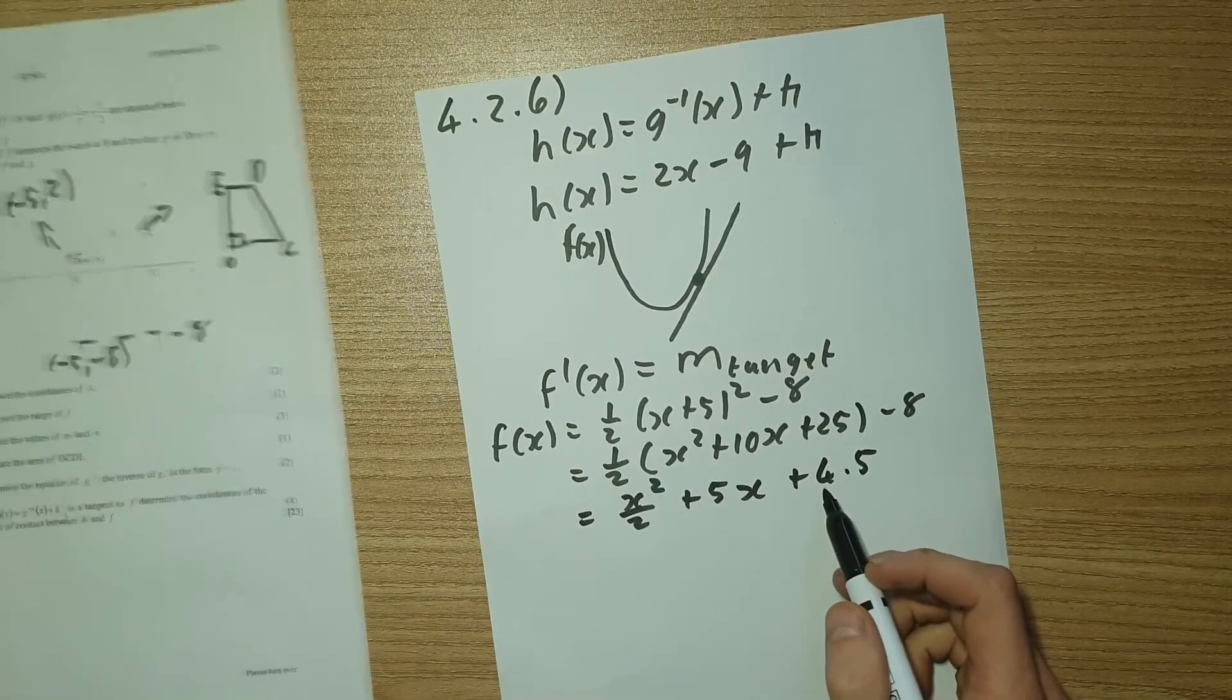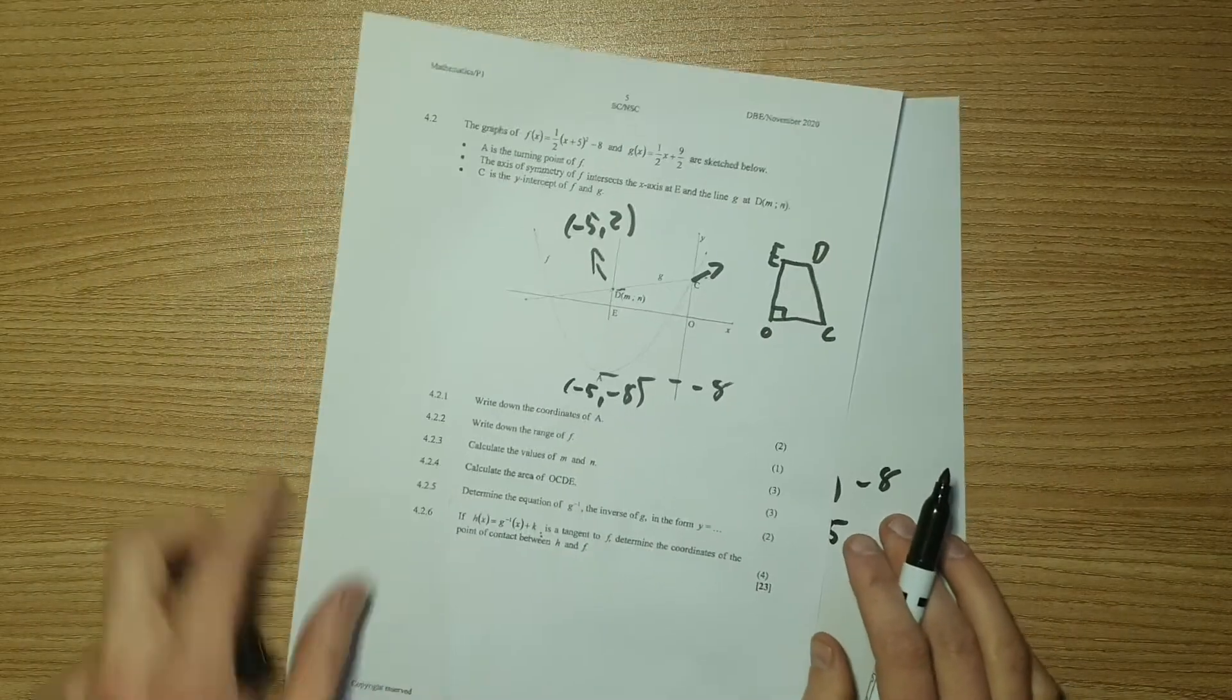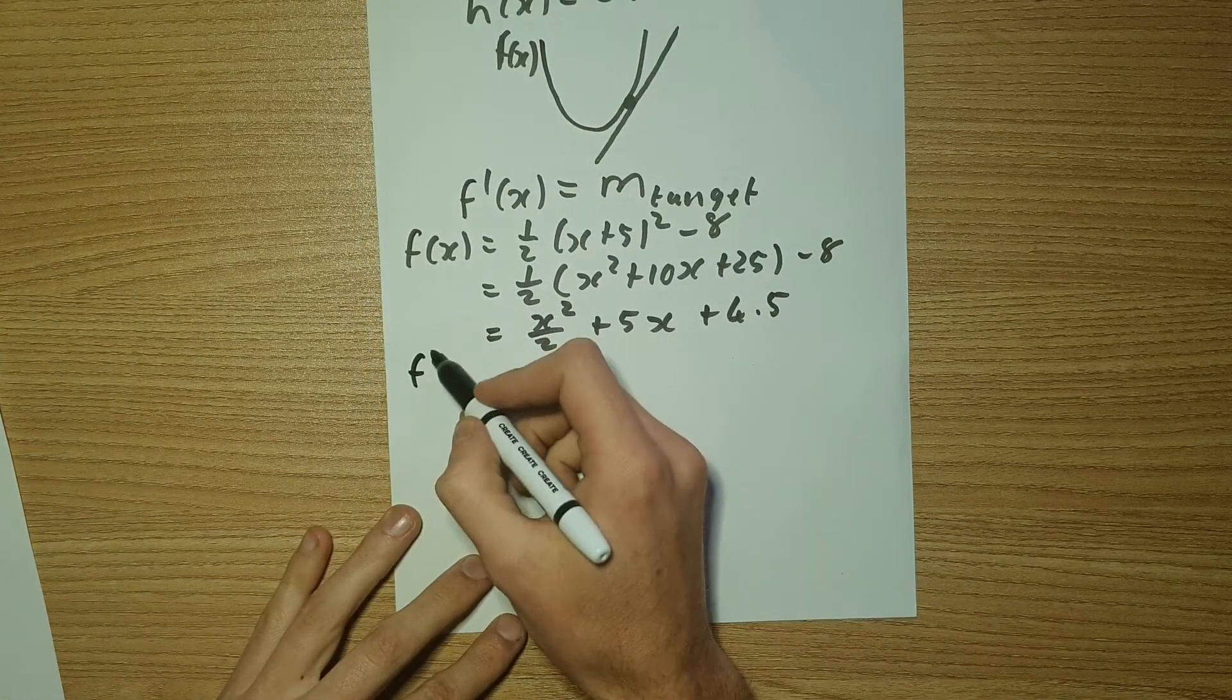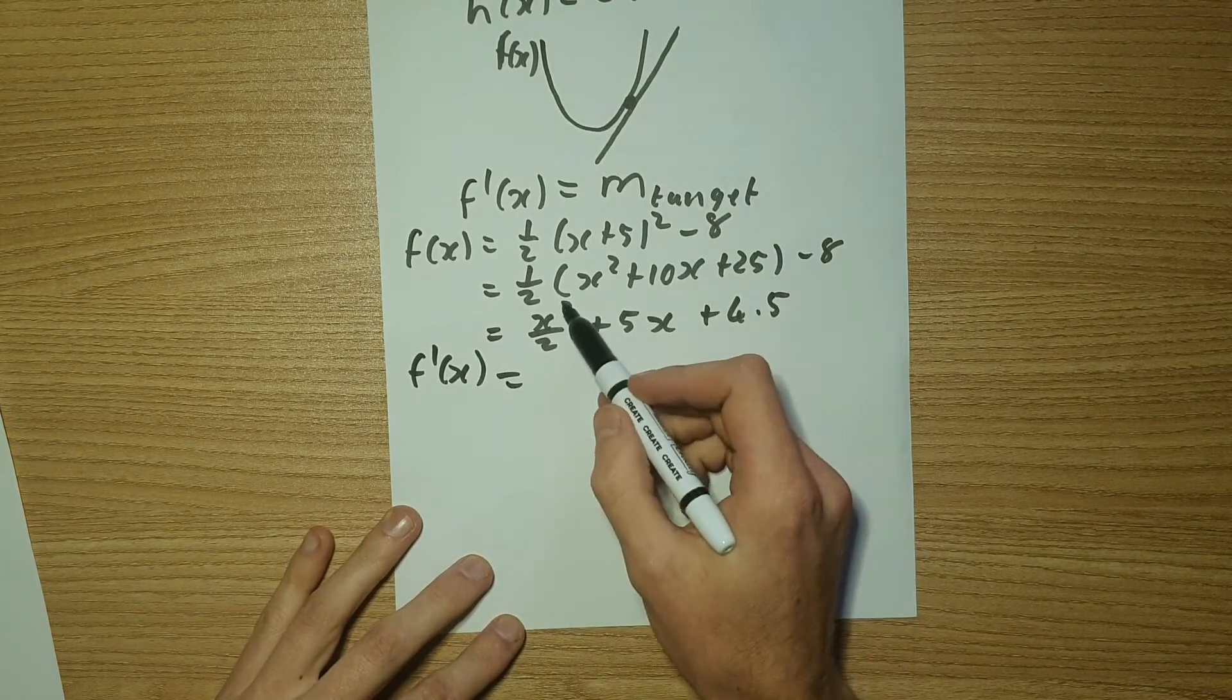So if we distribute the half in and then minus the eight off of it, we're going to end up with X squared over two plus five X plus 4.5. This makes sense because remember, G of X, we said that it intercepts at nine over two, which is 4.5.